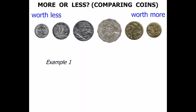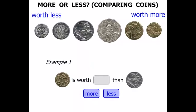Example 1 now. We've got a $1 coin there. $1 is worth more or less than 20 cents? It's worth more. So we say that $1 is worth more than 20 cents.